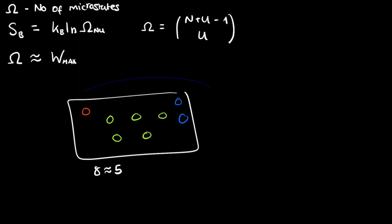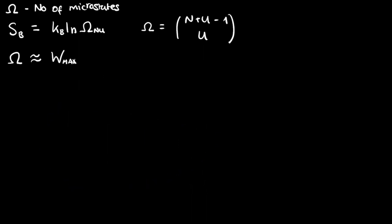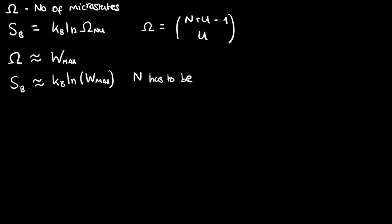If we substitute this into Boltzmann's formula, we say that the Boltzmann entropy is approximately kb times the log of W_max. That is our approximation, and it turns out to be a pretty good approximation for large numbers of particles. The condition is that n has to be large. In practice, when we're applying this to gases, n is going to be a madly big number, so you don't have to worry about that not being a valid approximation.